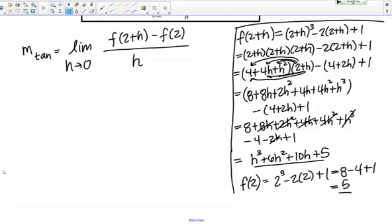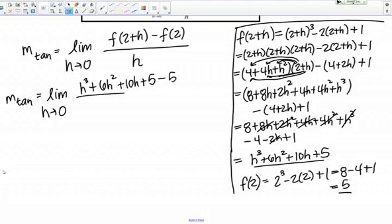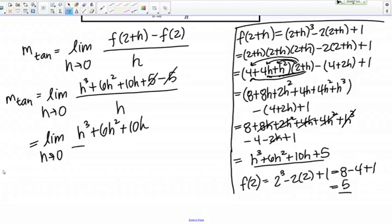Now that I have all that messy algebra worked out, I'm going to come back to my slope of tangent line formula and plug in those pieces. So the slope of the tangent line equals the limit as h goes to 0, so for f(2 + h), I have calculated that to be h³ + 6h² + 10h + 5, minus f(2), which is 5, all over h. So I see that in the top I've got 5 - 5, so those go away. So now I have the limit as h goes to 0 of h³ + 6h² + 10h all over h.